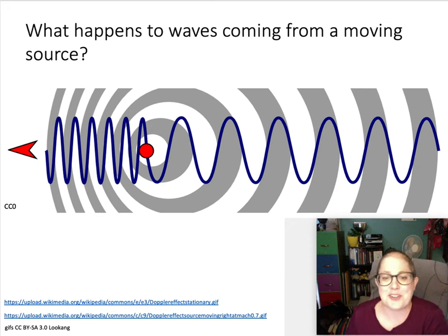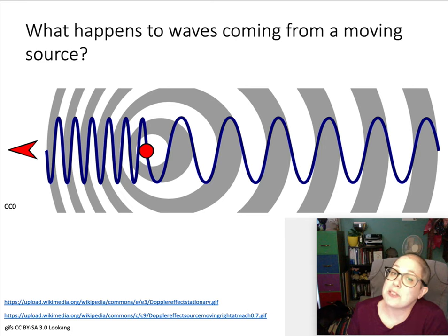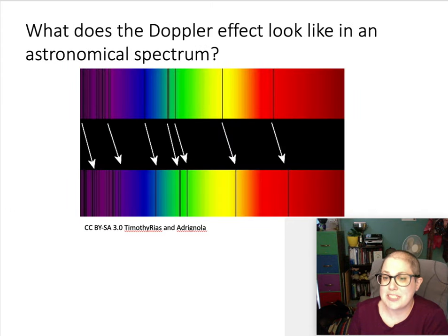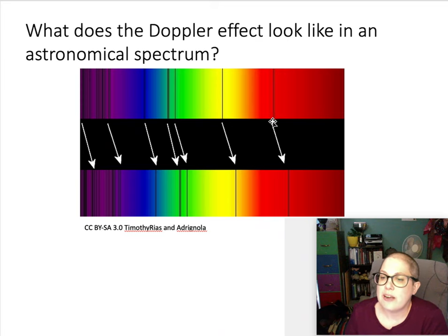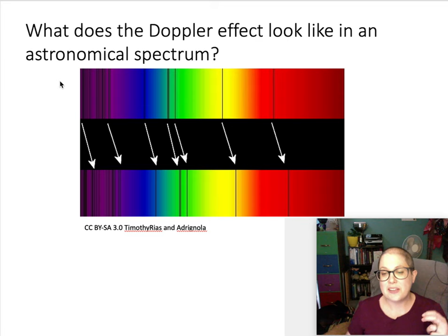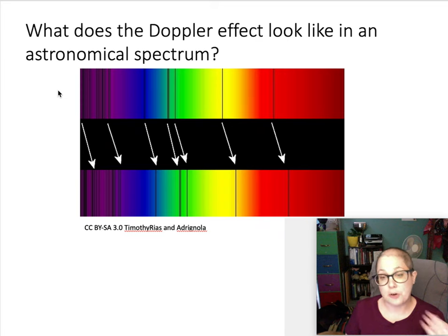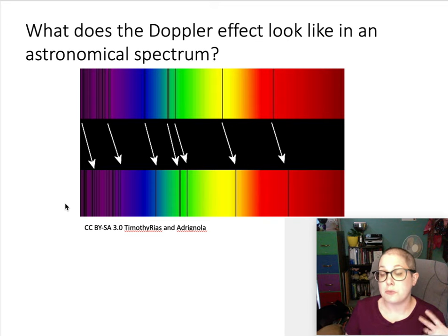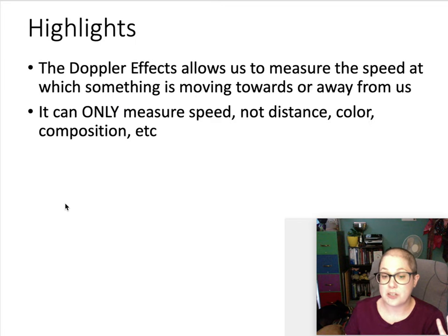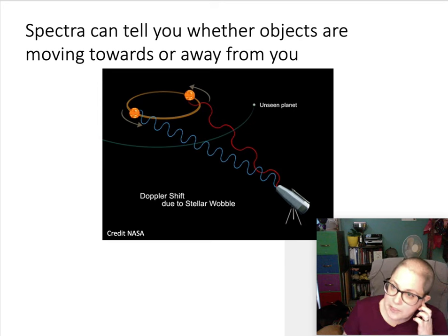This doesn't just happen with light — it happens with sound too. A classic example is a train whistle: it gives off a specific frequency, and as the train comes toward you you hear a higher pitch, and as it passes you it drops. We can hear this in everyday life. We see it in light when we observe a shifted spectrum — the absorption lines appear at longer wavelengths than they should be, telling us the object is red-shifted and moving away.